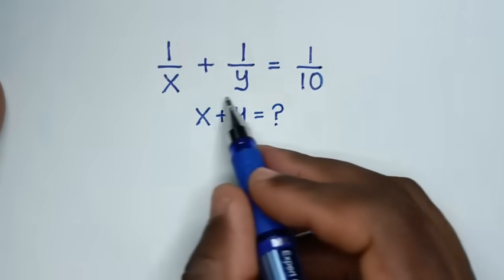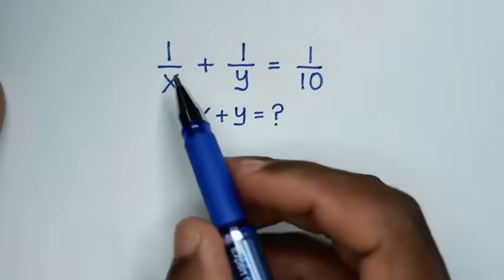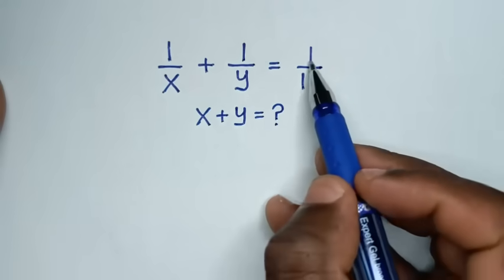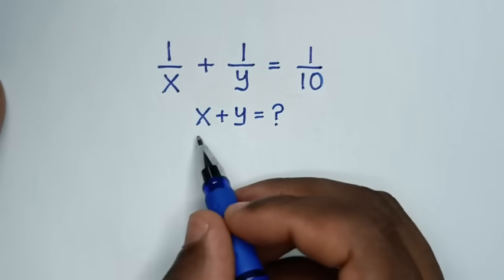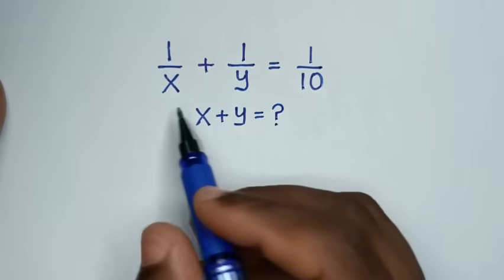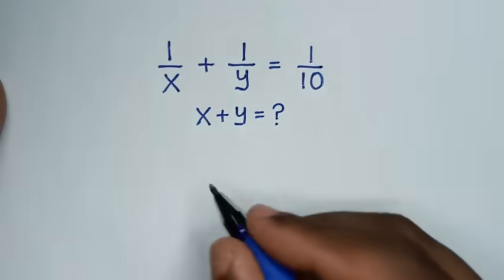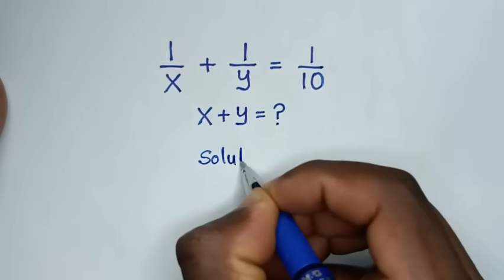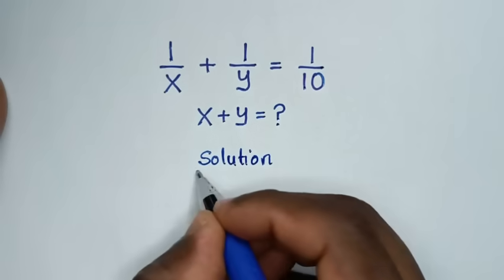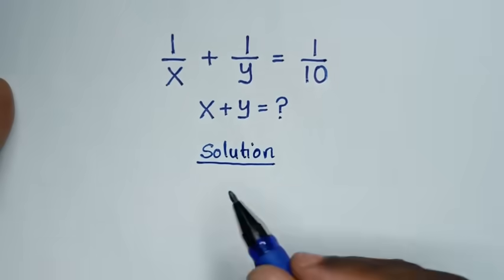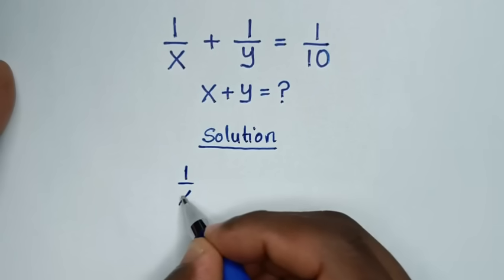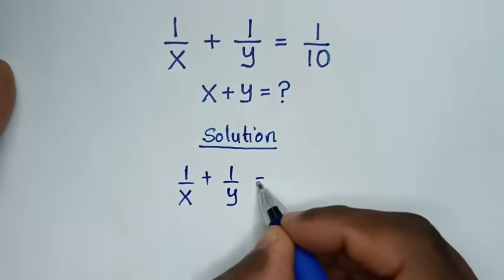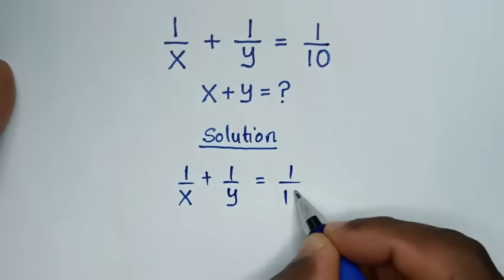Welcome. The problem is: 1 over x plus 1 over y is equal to 1 over 10. We need to find the values of x plus y from this equation.